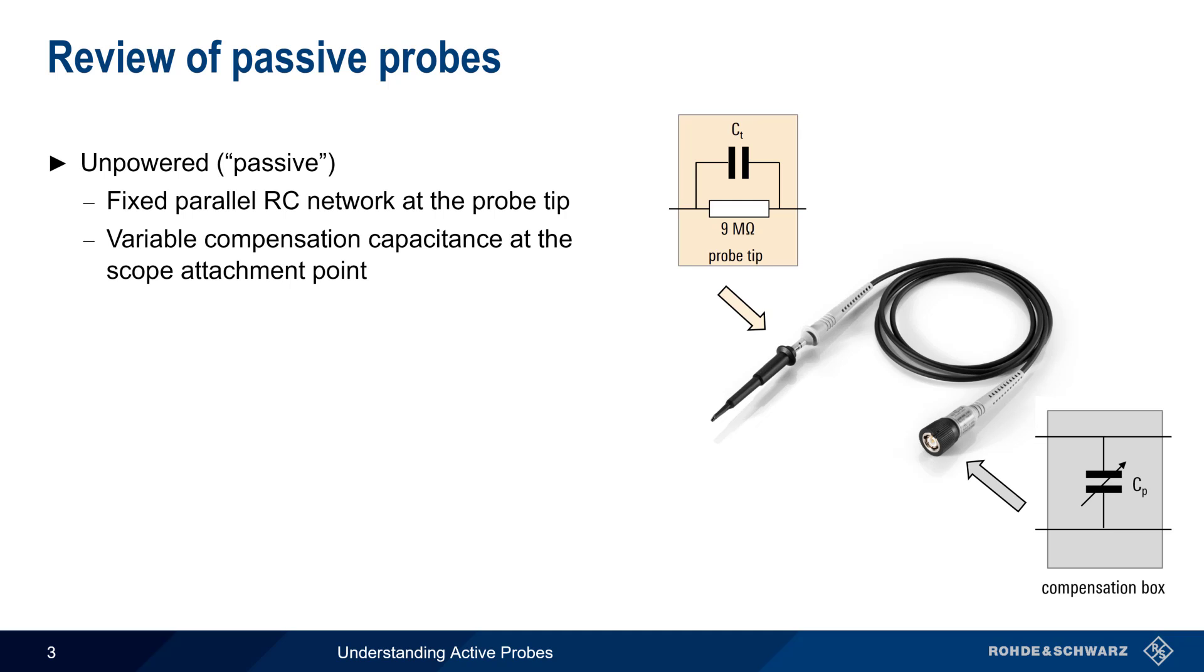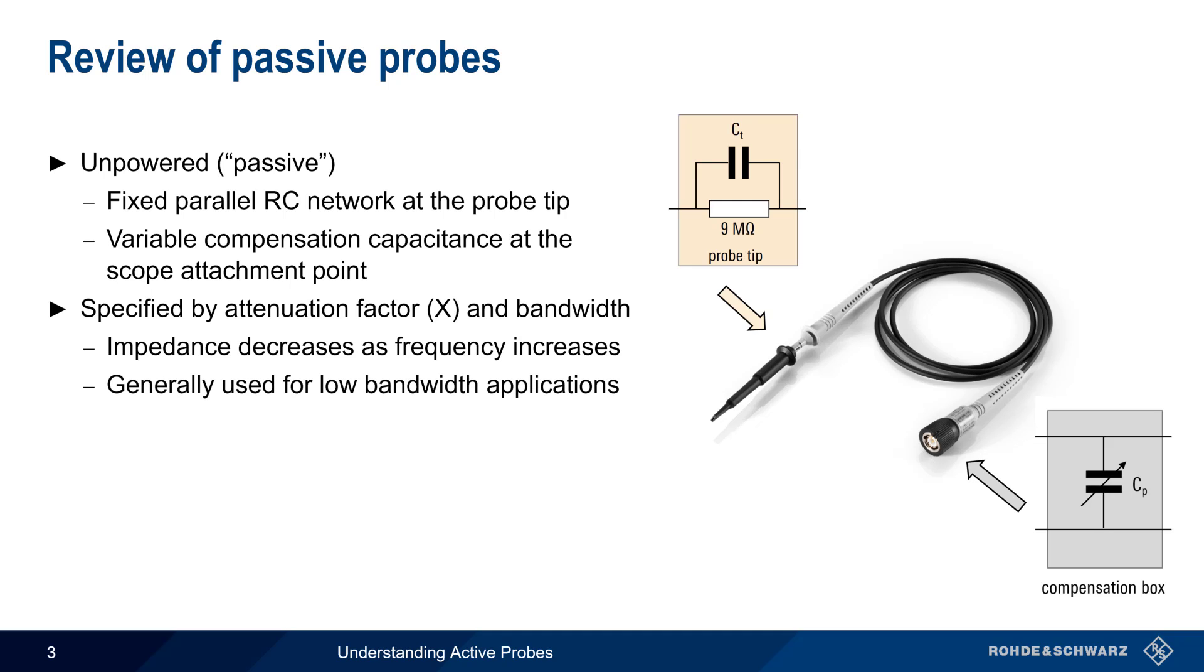Like most other probes, passive probes are specified by an attenuation factor and a bandwidth. Because of the capacitance in the probe tip, the impedance of a passive probe decreases with increasing frequency. And therefore, passive probes are most often used for low-frequency and/or low-bandwidth applications.